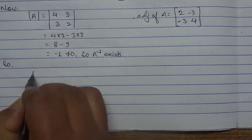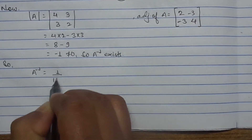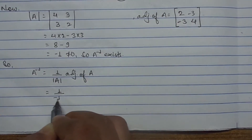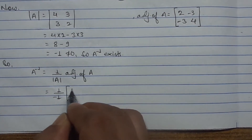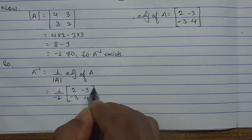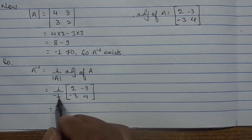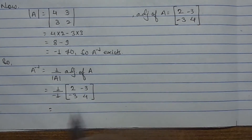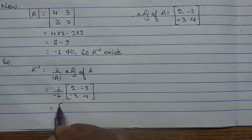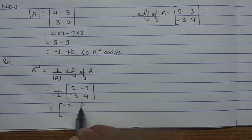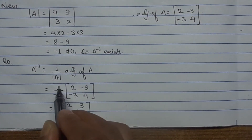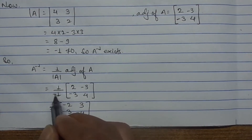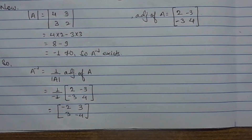Now we find A inverse: it equals 1 upon the determinant of A, times the adjoint of A. The determinant is minus 1, and the adjoint is [2, -3; -3, 4]. Since 1 upon minus 1 is minus 1, we multiply each element by minus 1, changing all signs. This gives A inverse equals [-2, 3; 3, -4].